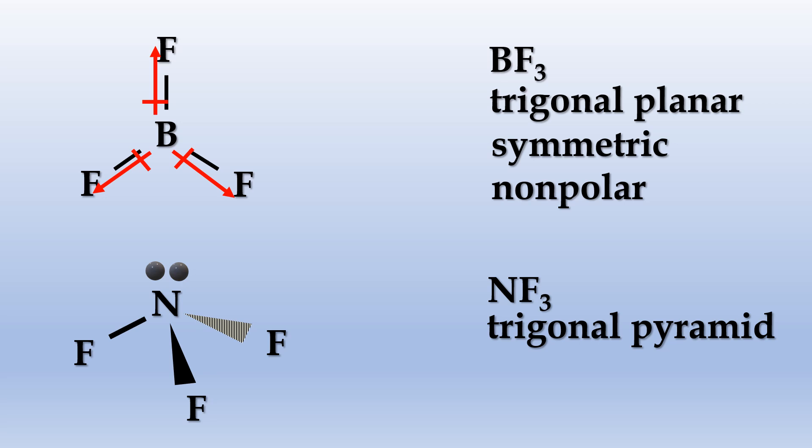I'm using the wedge and dash notation to indicate the directions. The solid wedge shows a fluorine atom coming out of your screen, while the dashes show a fluorine atom going into your screen. You can imagine the pyramid shape.